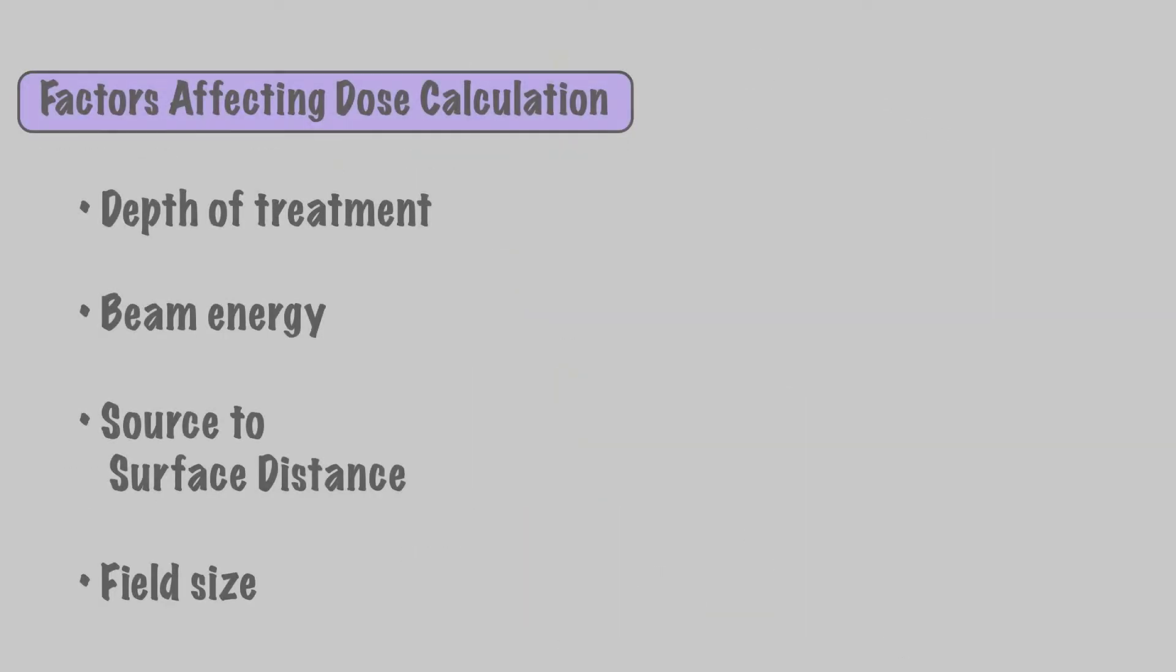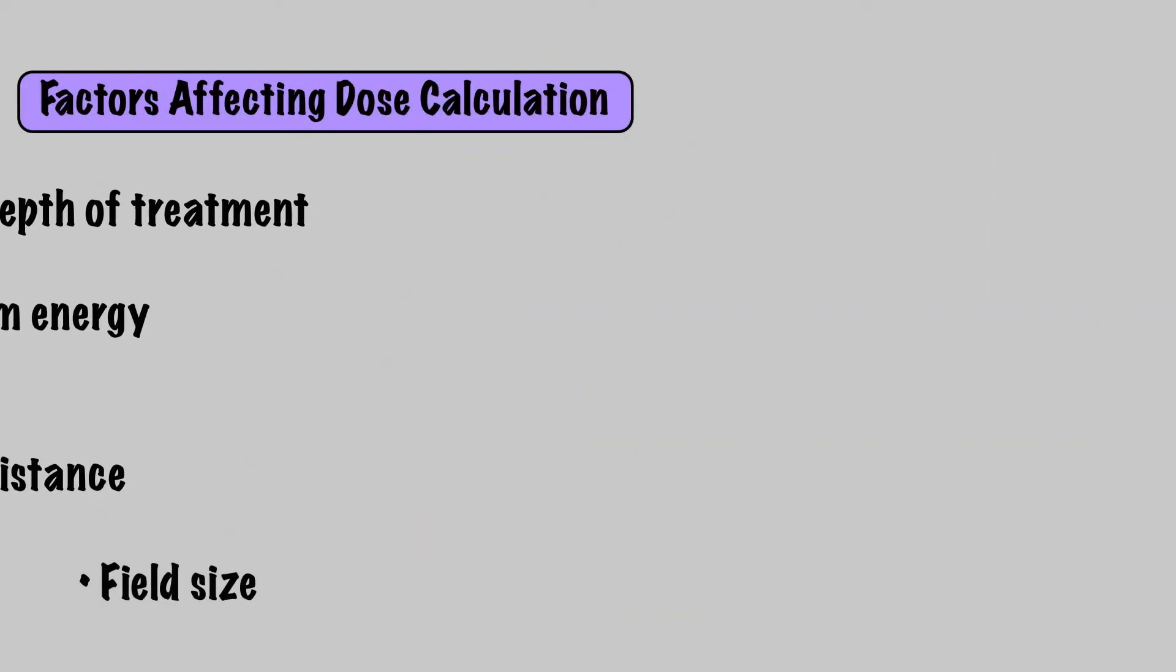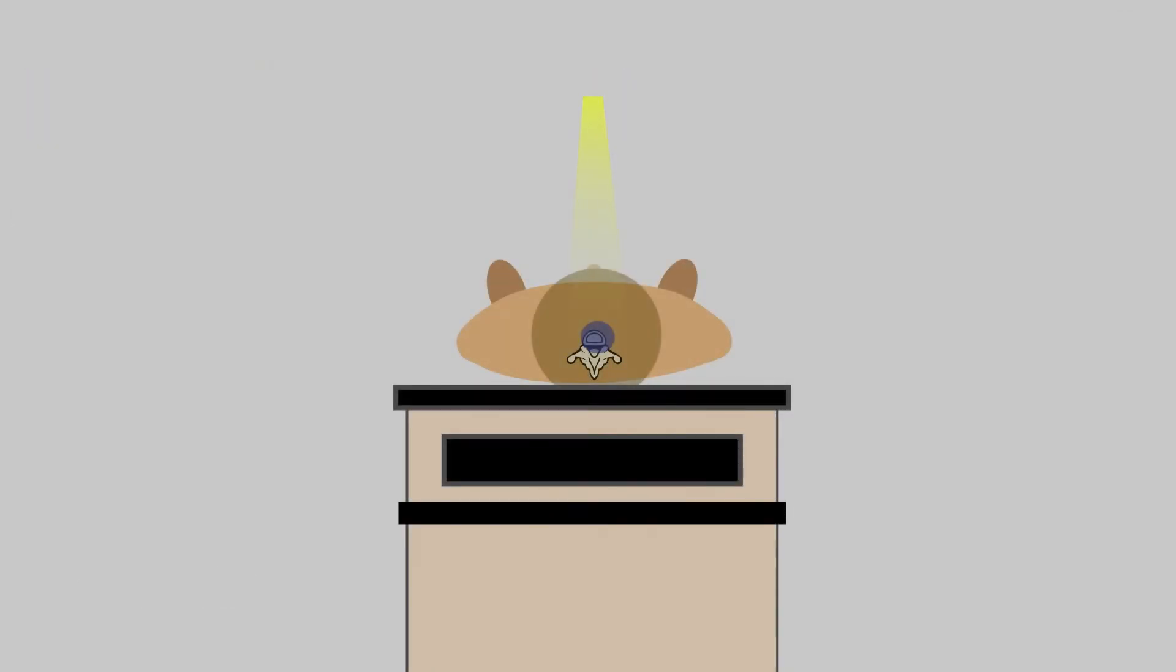This brings us to our last factor, field size. Output changes with field size. Intuitively, larger field sizes allow more photons through, and vice versa. Therefore, the number of monitor units required depends on field size.